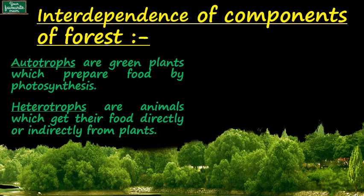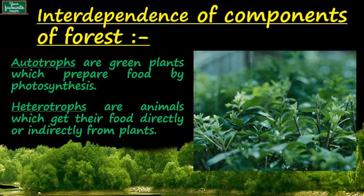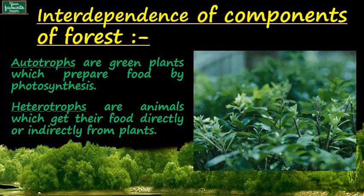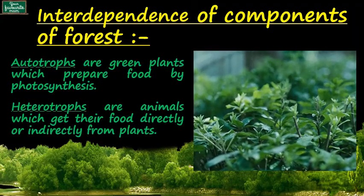There are many living organisms that live in forests and are interdependent on each other for survival. For example, autotrophs — autotrophs are the green plants which prepare their food by the process of photosynthesis. They absorb nutrients and water from soil, carbon dioxide from air, and sunlight as an energy source. They provide food to all living organisms which live in the forest. Thus, they are called the producers.